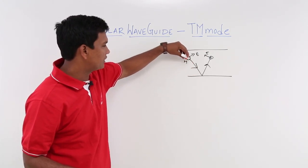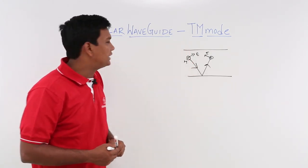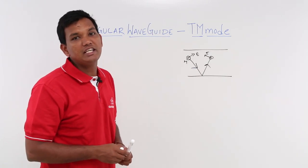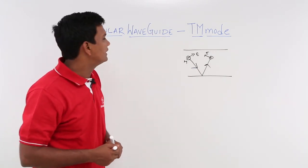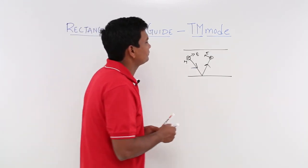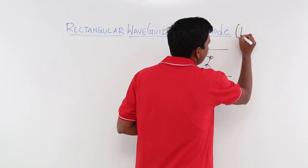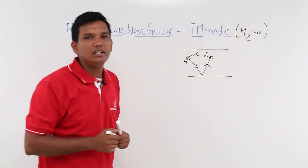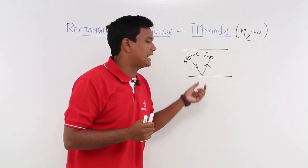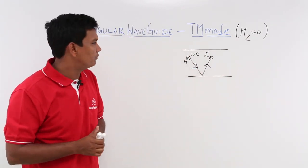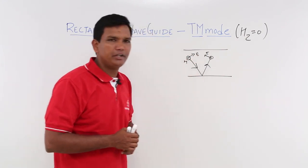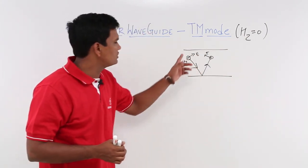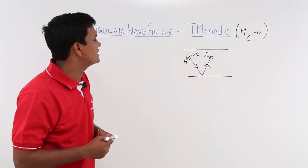We know that it has to be perpendicular, but it will not have any component along the Z direction. That is what we mean. Your H_Z should be equal to 0. For the magnetic field, the component along the direction of propagation should be 0. But will the component of electric field along the Z direction be 0? The answer is no.